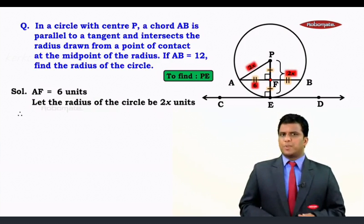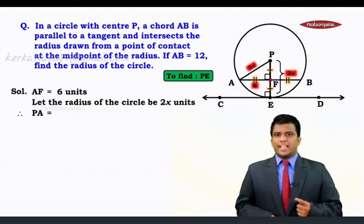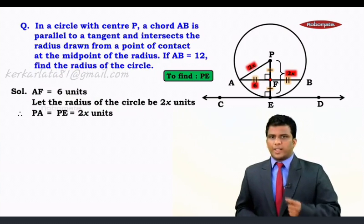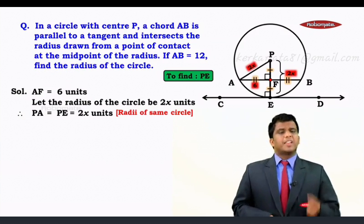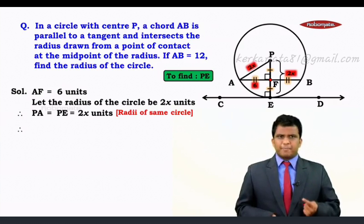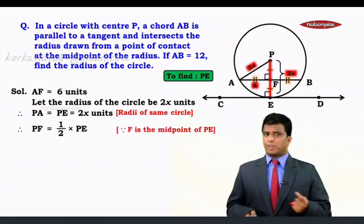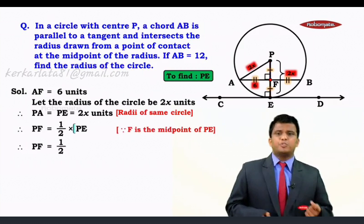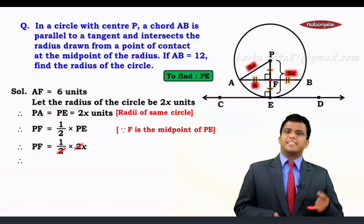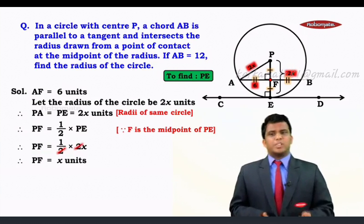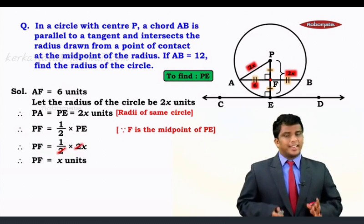Now what happens because of this? PA and PE are 2x units. We know F is the midpoint of segment PE. That means PF will be half of PE because F is the midpoint. And half of 2x will now give us x. So PF will be equals to x units, children.